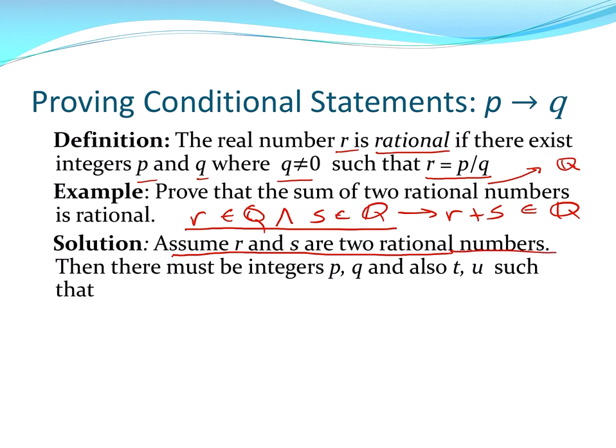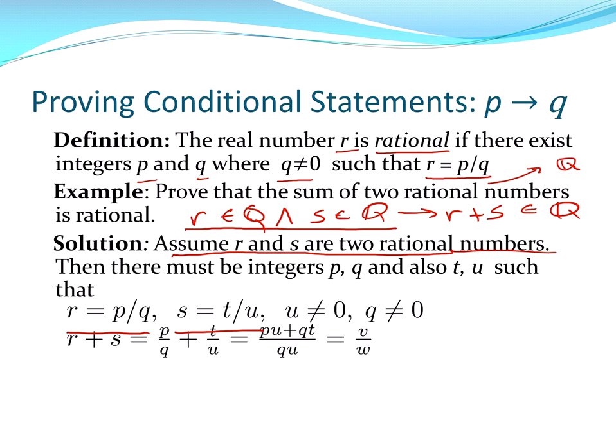And then once we assume that, we apply the definition of rational and show that r is equal to p divided by q and q non-zero. s is equal to t divided by u with u non-zero. And now let's just do some addition. So r plus s, then, is going to be p over q plus t over u, which when we get a common denominator and add them up, we get p times u plus q times t over q times u, which we replace with two integers, v over w. And since u and q are both non-zero, w will be non-zero.